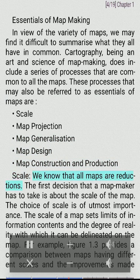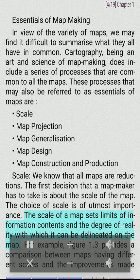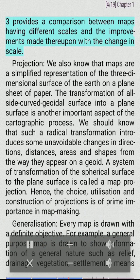Scale. We know that all maps are reductions. The first decision that a map maker has to take is about the scale. The choice of scale is of utmost importance. The scale of a map sets limits of information contents and the degree of reality with which it can be delineated on the map. Figure 1.3 provides a comparison between maps having different scales and the improvements made thereupon with the change in scale.